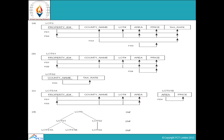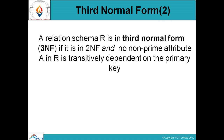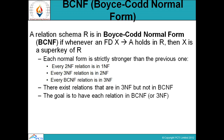That was basically showing the dependencies again as shown in the previous example and how we can remove them. Next is BCNF — Boyce-Codd Normal Form. When data has passed through third normal form, it must enter into Boyce-Codd Normal Form.